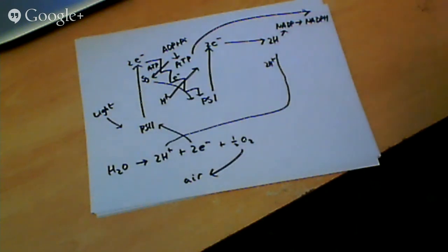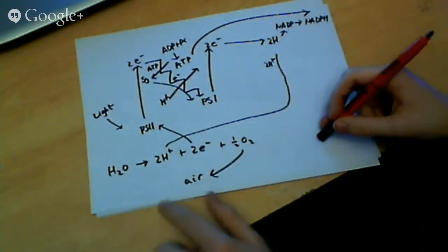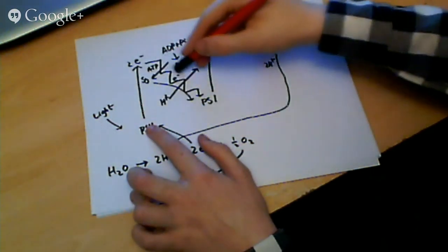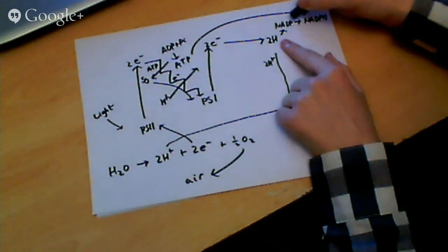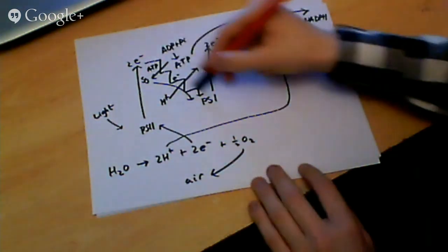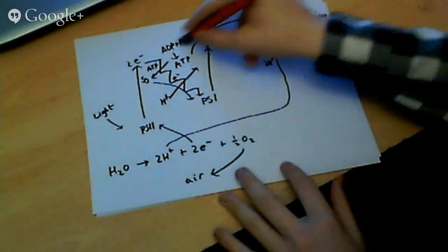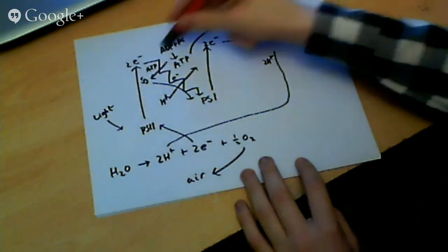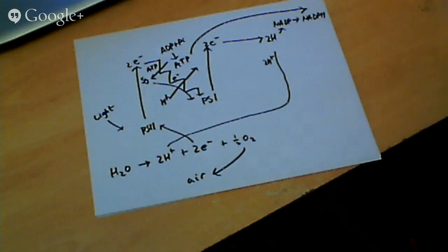I'll go through it again. Photolysis of water: you get protons, electrons, and oxygen expelled into the air. The electrons go into photosystem 2, are given out, go down the electron transport chain to photosystem 1, which then combines them with the earlier protons to reduce NADP to NADPH. As the electrons go down the electron transport chain, they give energy to protons to come into the thylakoid space, building up a proton gradient. They then diffuse out through ATP synthase — actively going in, diffusing out. As the hydrogen ions diffuse out, ADP + Pi form ATP which carries on to the next stage.